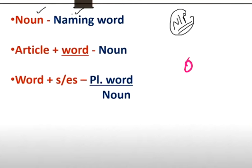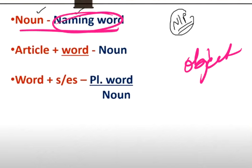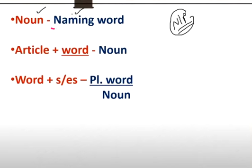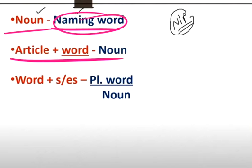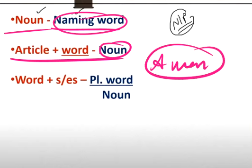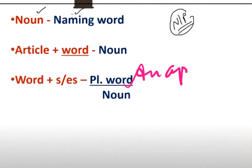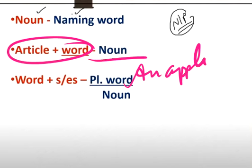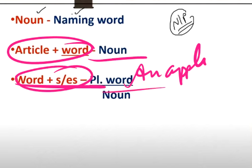Now we will learn about object. First we will revise the noun. What is a noun? If you add an article and a word, like 'a man' - this will be a noun. Or 'an apple' - article plus word is a noun. A word or its plural form is also a noun.